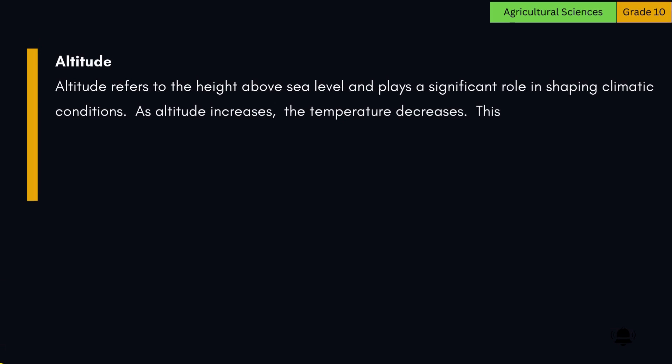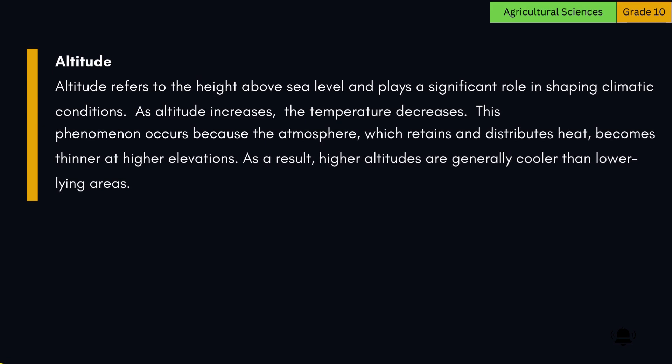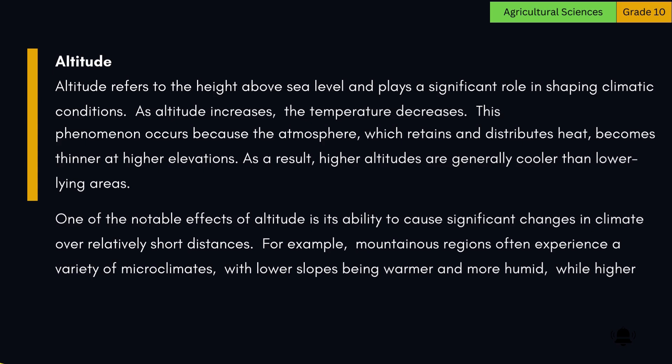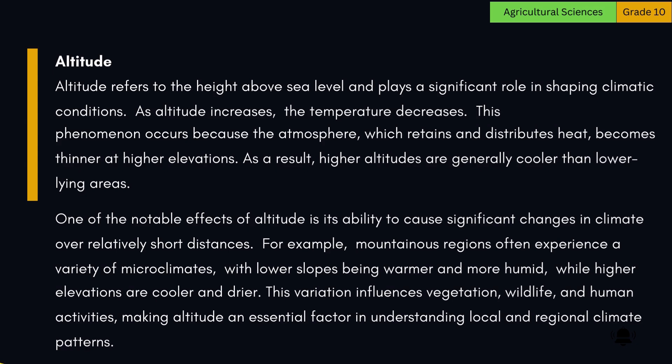Altitude refers to the height above sea level and plays a significant role in shaping climatic conditions. As altitude increases, temperature decreases, because the atmosphere — which retains and distributes heat — becomes thinner at higher elevations. Higher altitudes are therefore generally cooler than lower-lying areas. Altitude can cause significant changes in climate over relatively short distances; mountainous regions often experience a variety of microclimates, with lower slopes being warmer and more humid, while higher elevations are cooler and drier. This variation influences vegetation, wildlife, and human activities, making altitude an essential factor in understanding local and regional climate patterns.